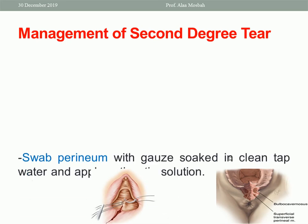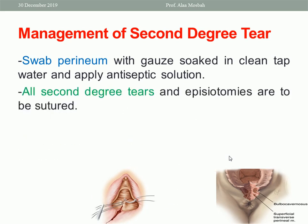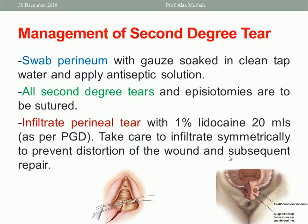Management of second degree tear: swab the perineal area, soak in clean tap water, and apply antiseptic solution. All second degree tears and episiotomies are to be sutured — never leave a second degree tear without suturing. Infiltrate the perineal tear with 1% lidocaine, taking care to infiltrate symmetrically to prevent distortion of the wound and subsequent repair. We start above the apex of the tear in the vagina.